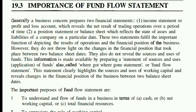Generally, a business concern prepares two financial statements. The first is an income statement, meaning profit and loss, which reveals the net result of trading operations over a period of time. The second is a position statement or balance sheet, which reflects the state of assets and liabilities of a company on a particular date.